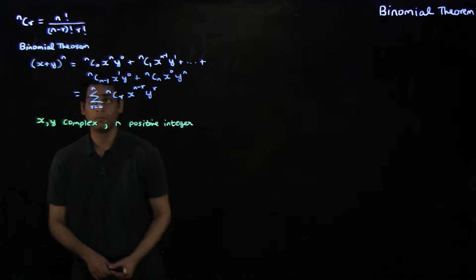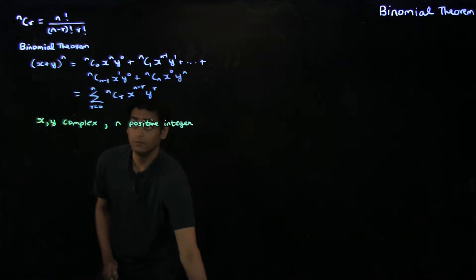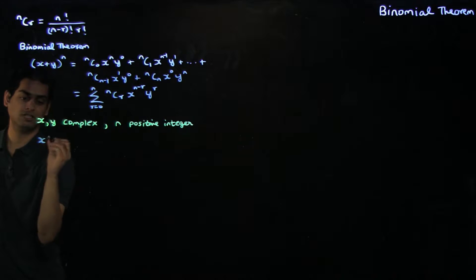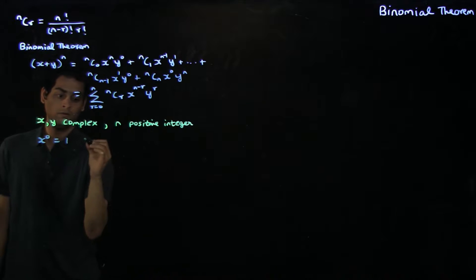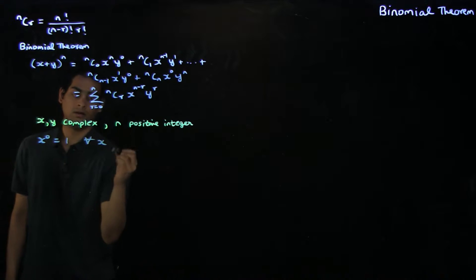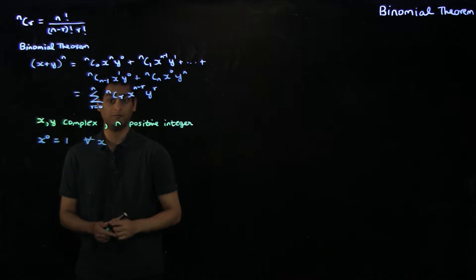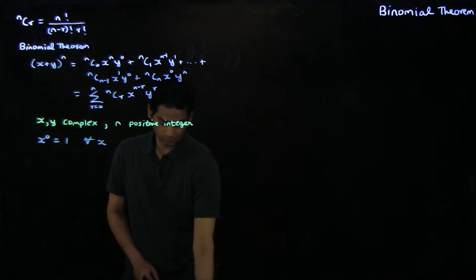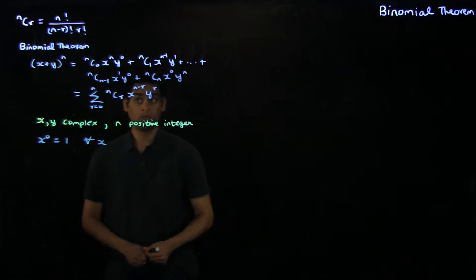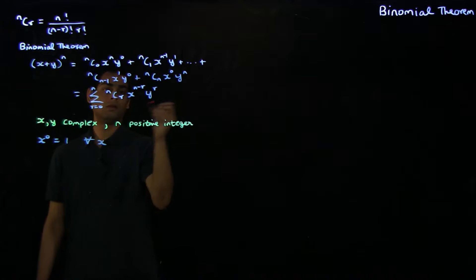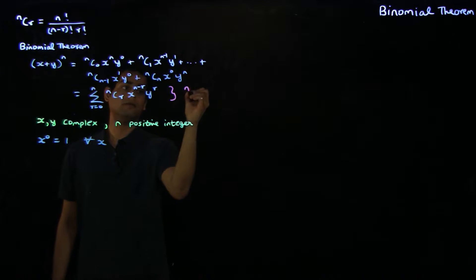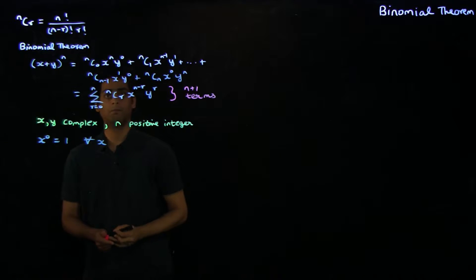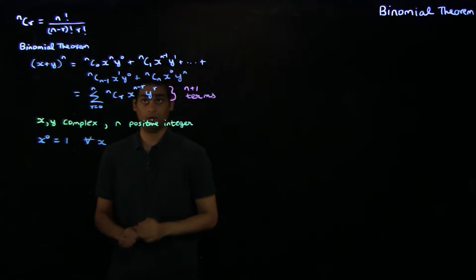In the expression of the binomial theorem, we take x to the 0 to be equal to 1 for all x which are complex numbers. So irrespective of the value of x, we define x to the 0 to be equal to 1. You notice that there are n plus 1 terms in the binomial theorem, not n terms but n plus 1 terms.